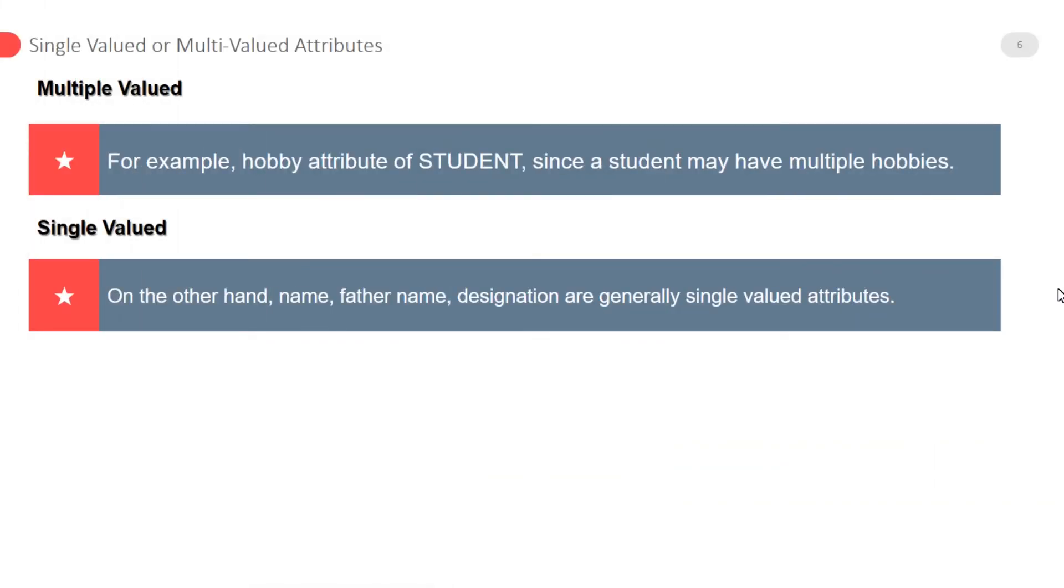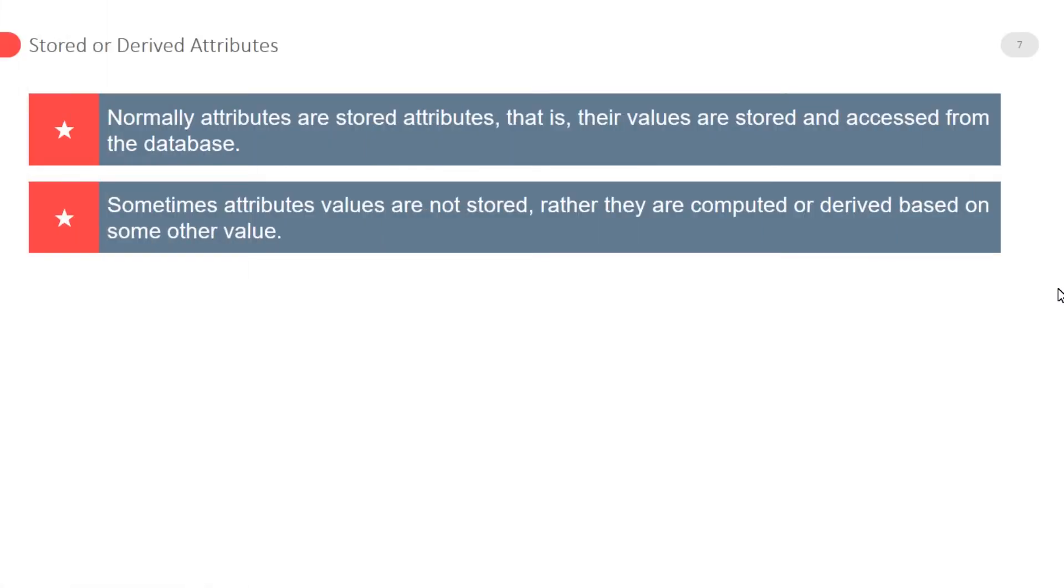Some attributes have single value at a time, whereas some others may have multiple values. Multiple valued attributes, for example, hobby attribute of student, since a student may have multiple hobbies. Single valued: on the other hand, name, father name, designation are generally single valued attributes.